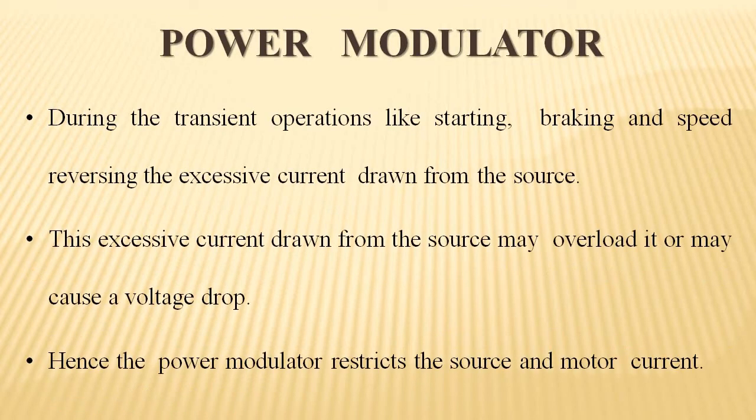During transient operations like starting, braking, and speed reversing, excessive current is drawn from the source. This excessive current may overload the source and cause a voltage drop. Hence, the power modulator restricts the source and motor current.